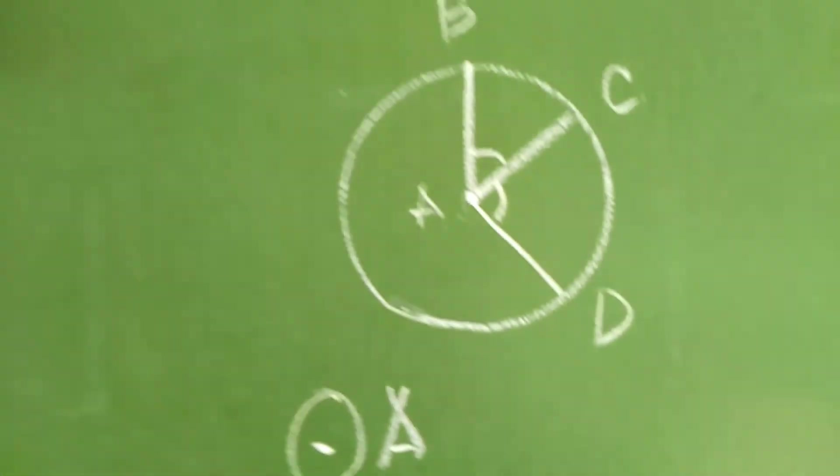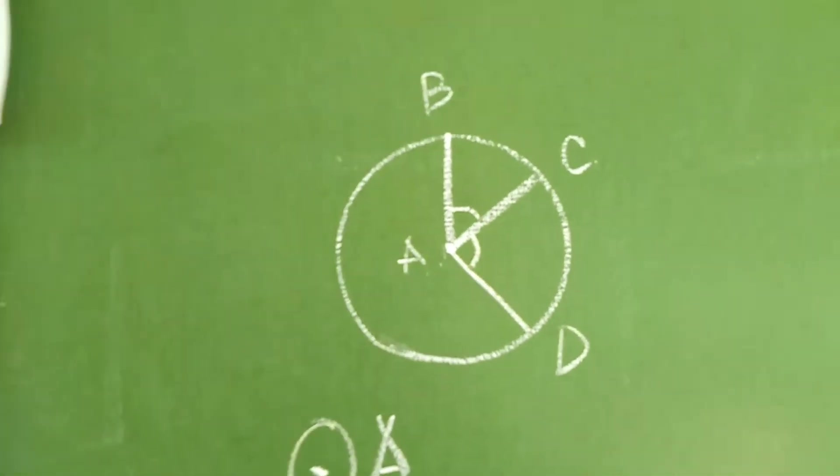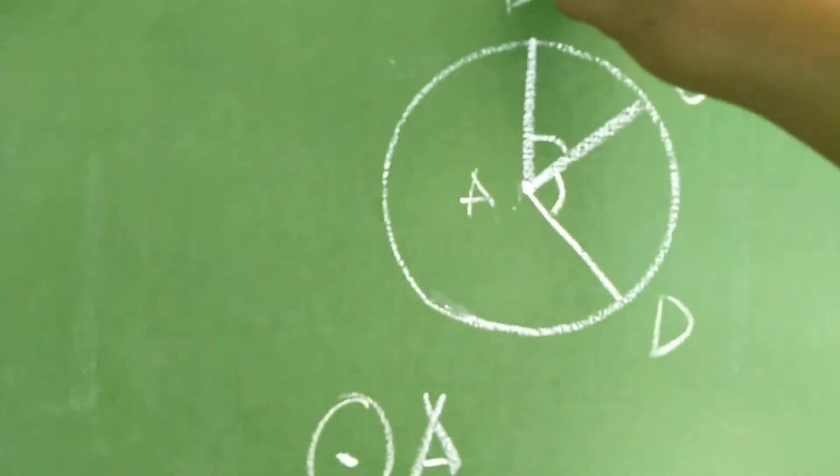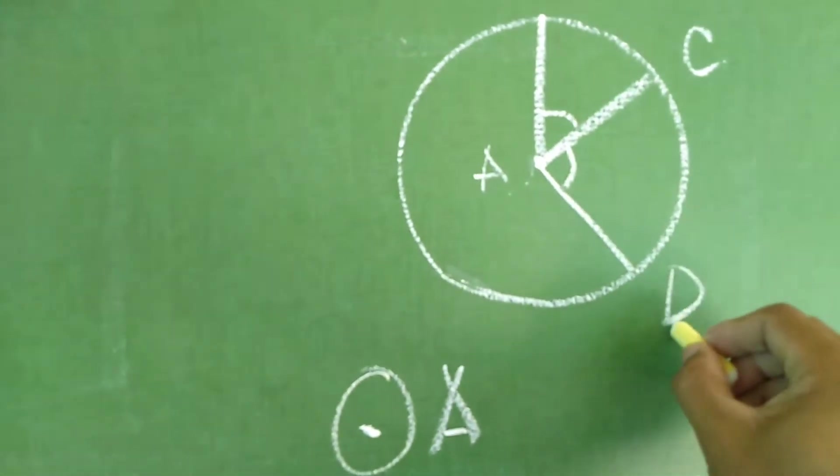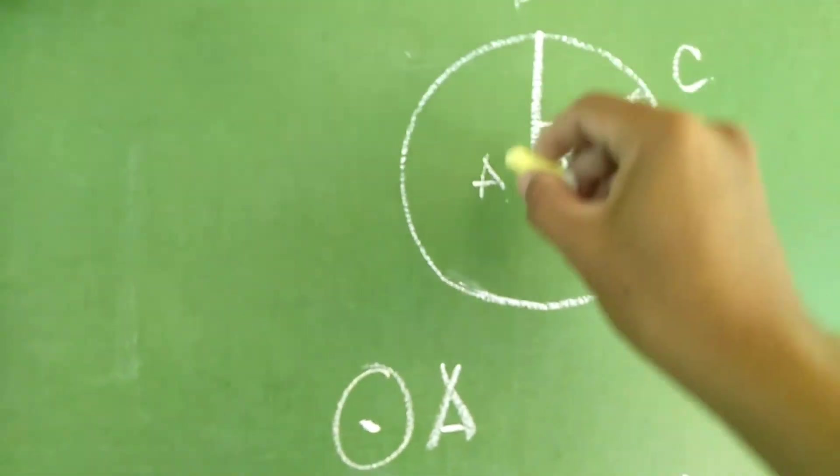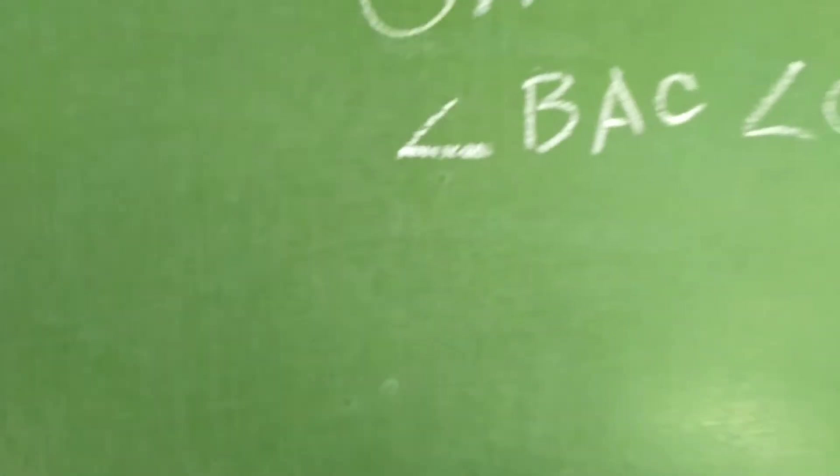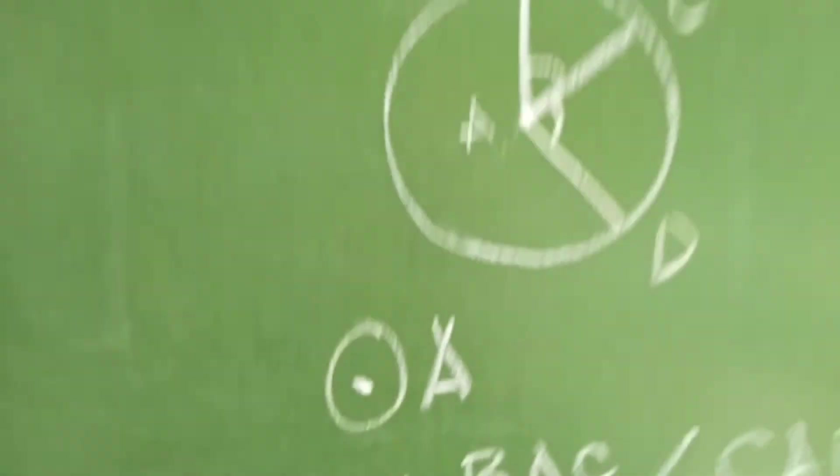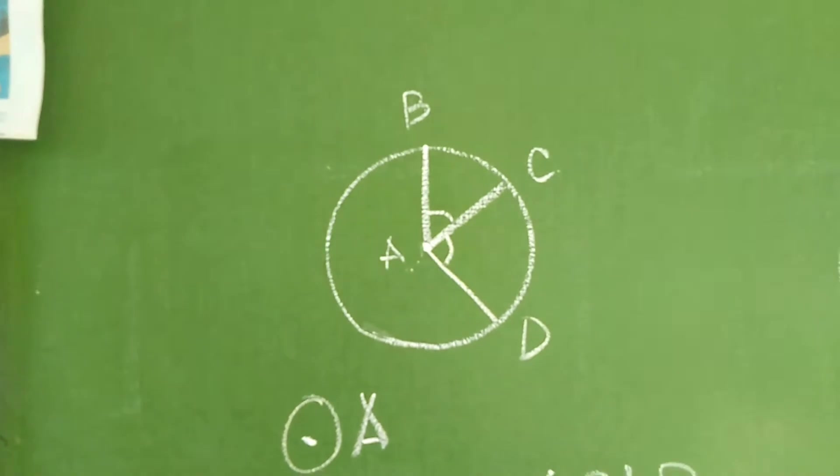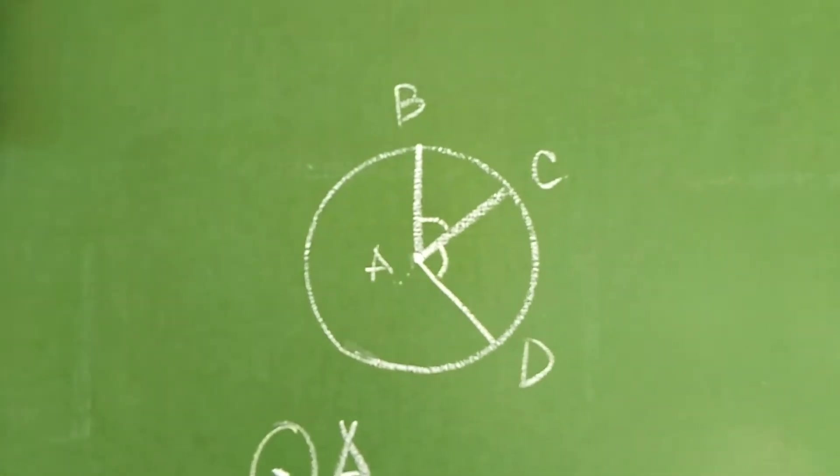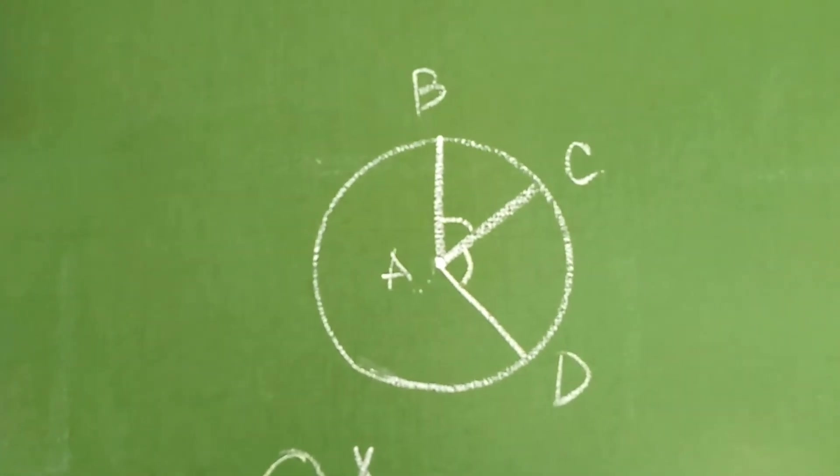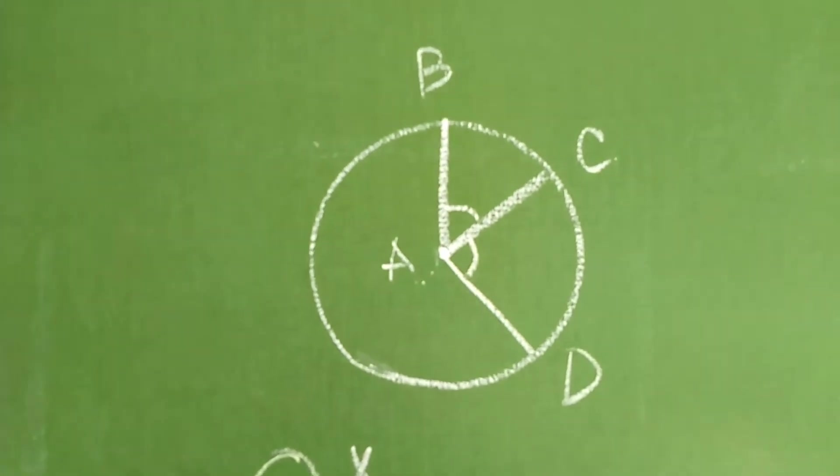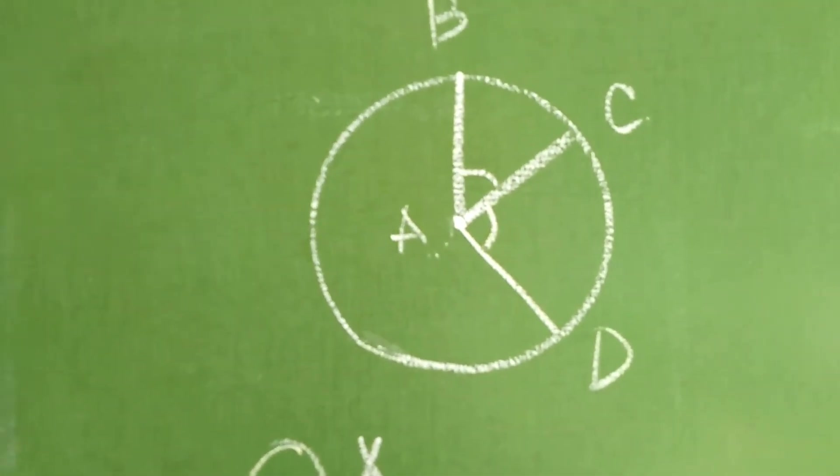Ang pangatlo naman po na sinasabi ko kanina is angle B, A, D. Again, I repeat. B, A, and D. Okay, Angle B, A, D. So, yung mga kanina, naniniwala doon sa sinabi ko na meron lang tayong dalawang Central Angle. Ang katotohanan po niyan is meron po tayong tatlo.